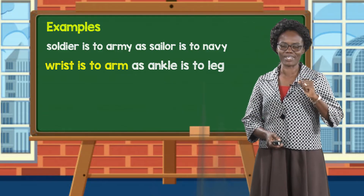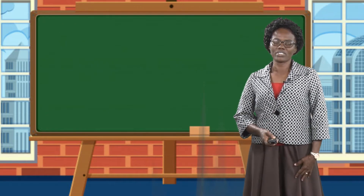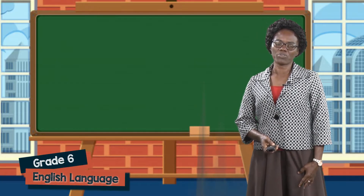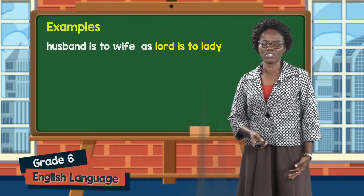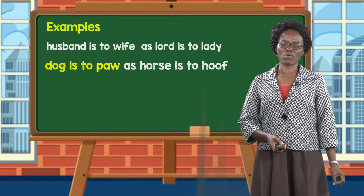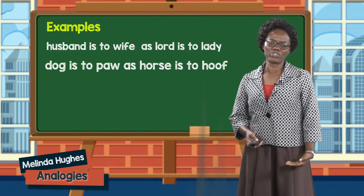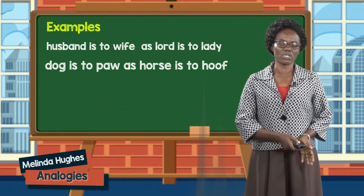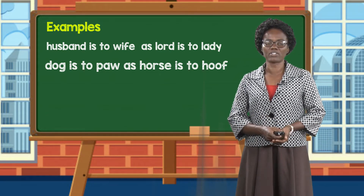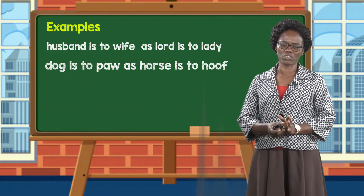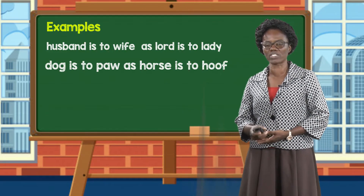Wrist is to arm as ankle is to leg. Looking at the examples given before — husband is to wife and lord is to lady, dog is to paw as horse is to hoof — we see relationships between one noun and another, or one type of body part to another. With dog is to paw, that's one animal, and horse is to hoof, that's another animal.